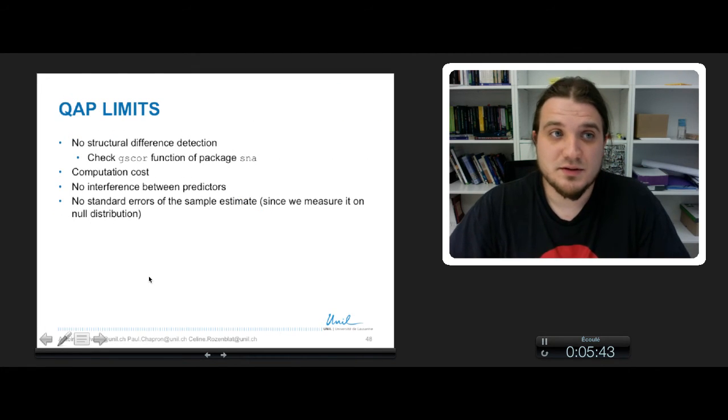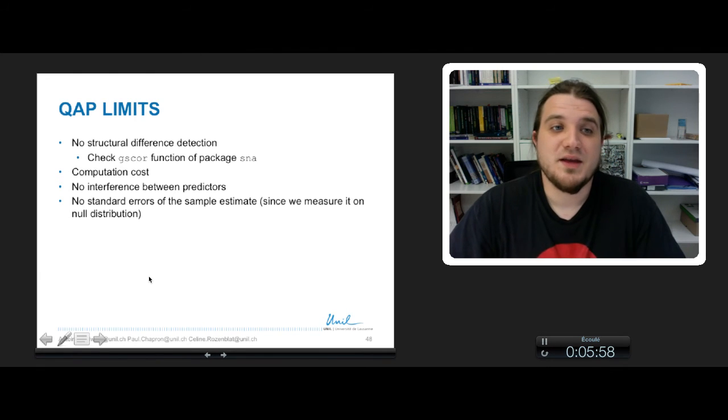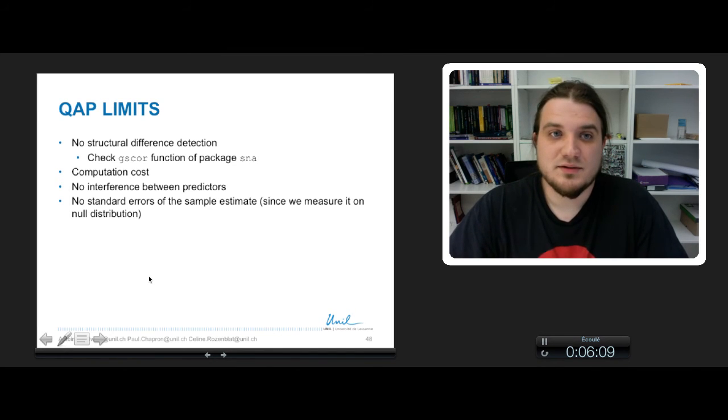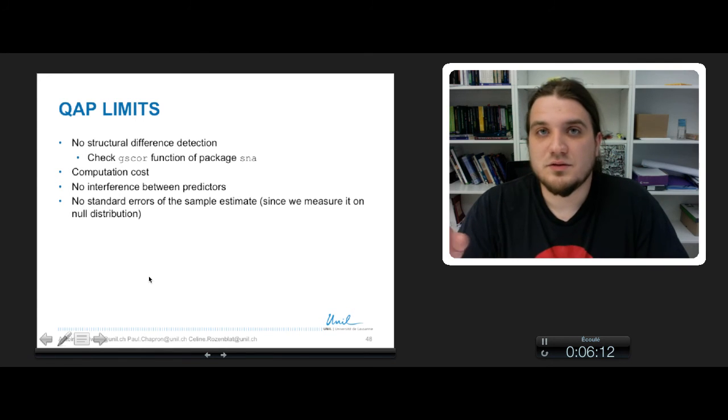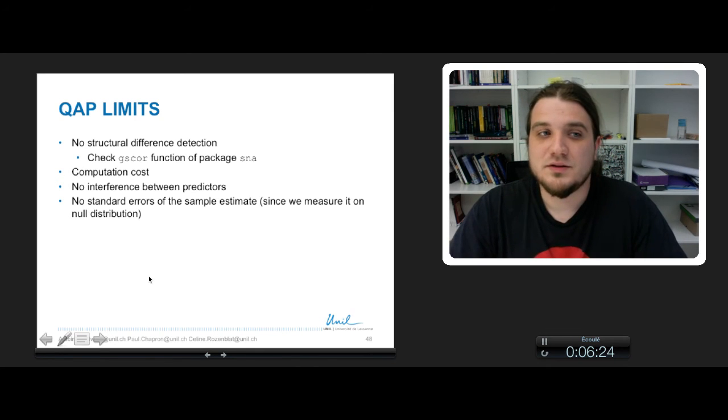The limitation of QAPs is that there is no structural difference detection. To do that, you can check the GS score function of the package SNA in R. If, in case of large matrices, the computation cost is very high, you cannot handle the interferences between some predictors. So basically, in a regression, you can't have cross terms between two graphs, for example, saying that a graph depends on one graph times the other graph. And finally, there is no standard error for the QAP correlation test because you measure the probability, the likelihood of correlation on the null distribution.